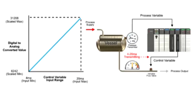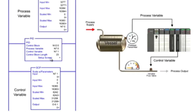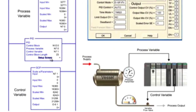The SCP output parameter is the file address of the analog output module. The analog output module converts the digital value in the range of 6,242 to 3,208 to an analog signal of 4 to 20 milliamps. The analog signal is then sent to the flow valve where the operating range is adjusted between 0 and 100%. With the data scaled using the SCP instruction, the process of controlling the pressure of the vessel to 50 PSI continues by entering the setpoint of 50 in the PID setup menu.